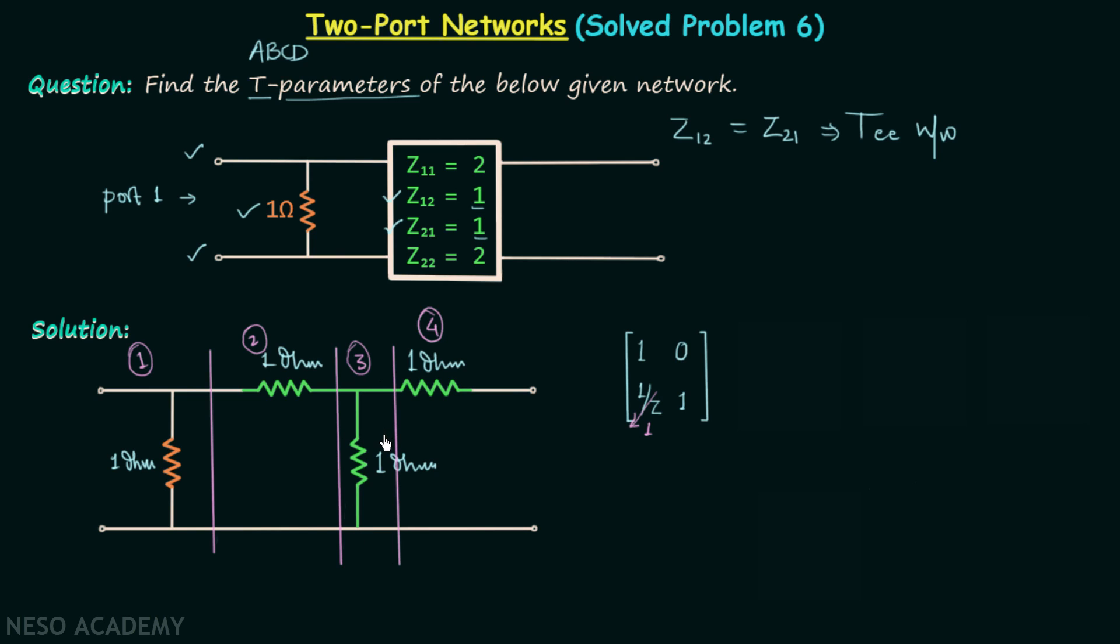We can see that first network is same as the third network, and therefore the third network will have the T-parameters matrix as 1, 0, 1, 1.